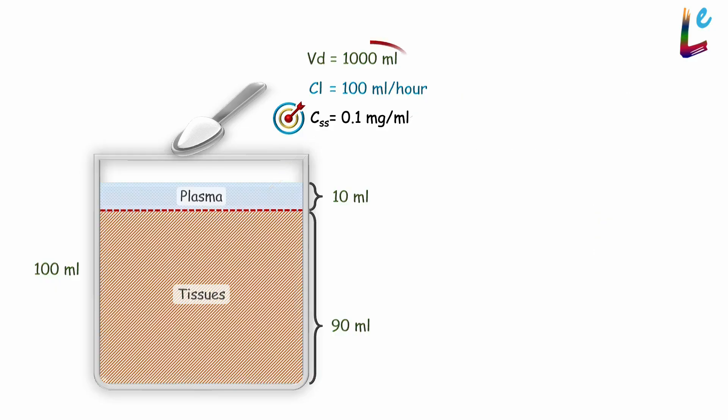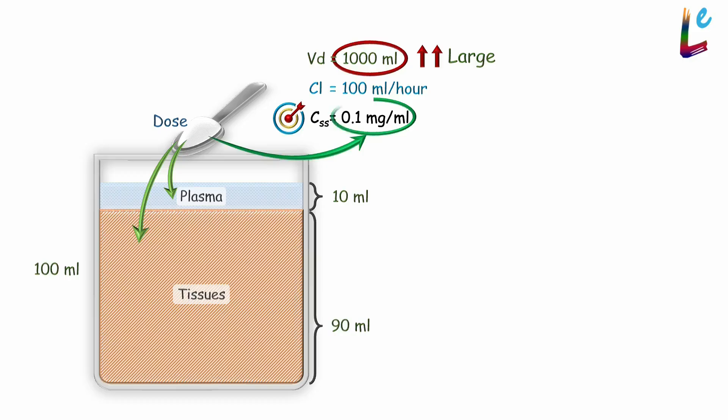The VD of the drug, 1000ml, is much more than the actual volume of the tub, 100ml. So much of the drug we add initially will be distributed into tissues. The dose we administer should account for this distribution of the drug into tissues and still manage to achieve the desired plasma concentration.